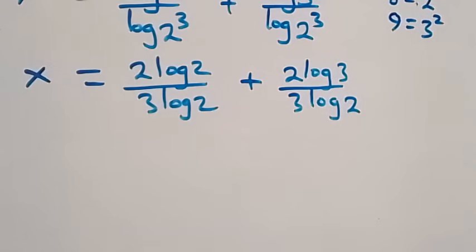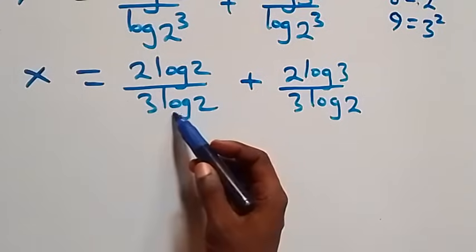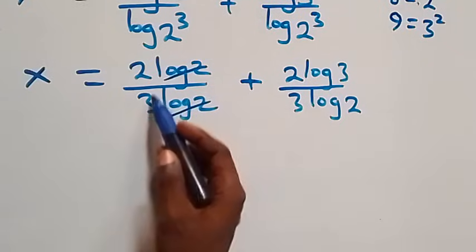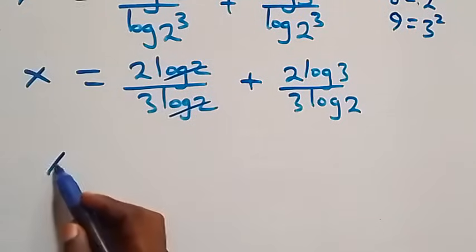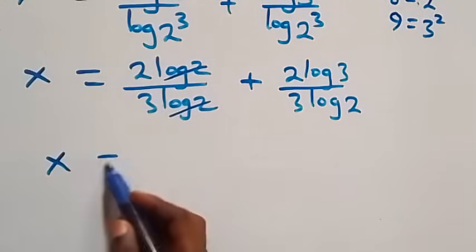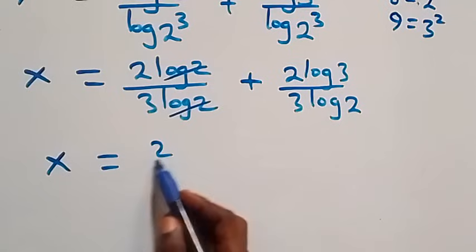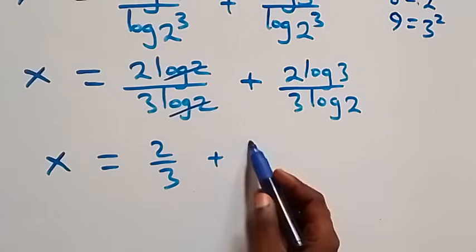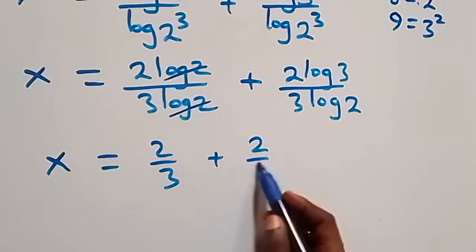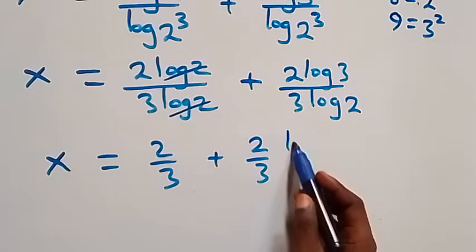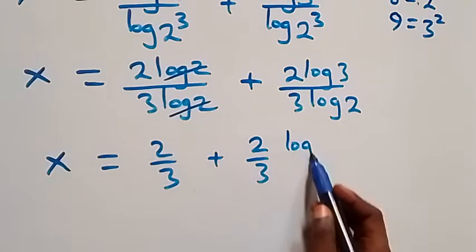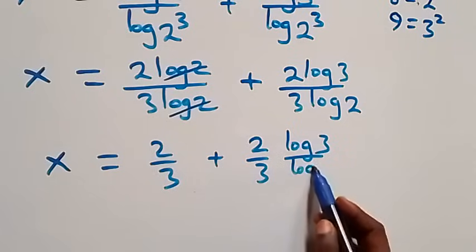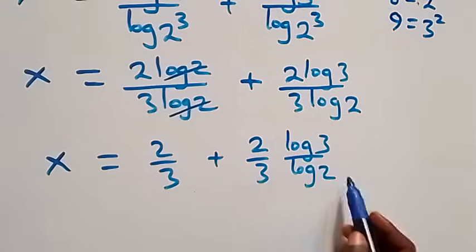The log 2 terms cancel each other on the first fraction, leaving 2 over 3. So x equals 2 over 3 plus 2 log 3 over 3 log 2.